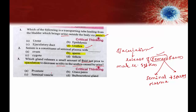The options include the prostate gland, seminal vesicle, bulbourethral gland, and glans penis. Glans penis is the tip of the penis, triangular in shape — it is not a gland. Prostate gland and seminal vesicles are not the correct options here. The right answer is the bulbourethral gland.